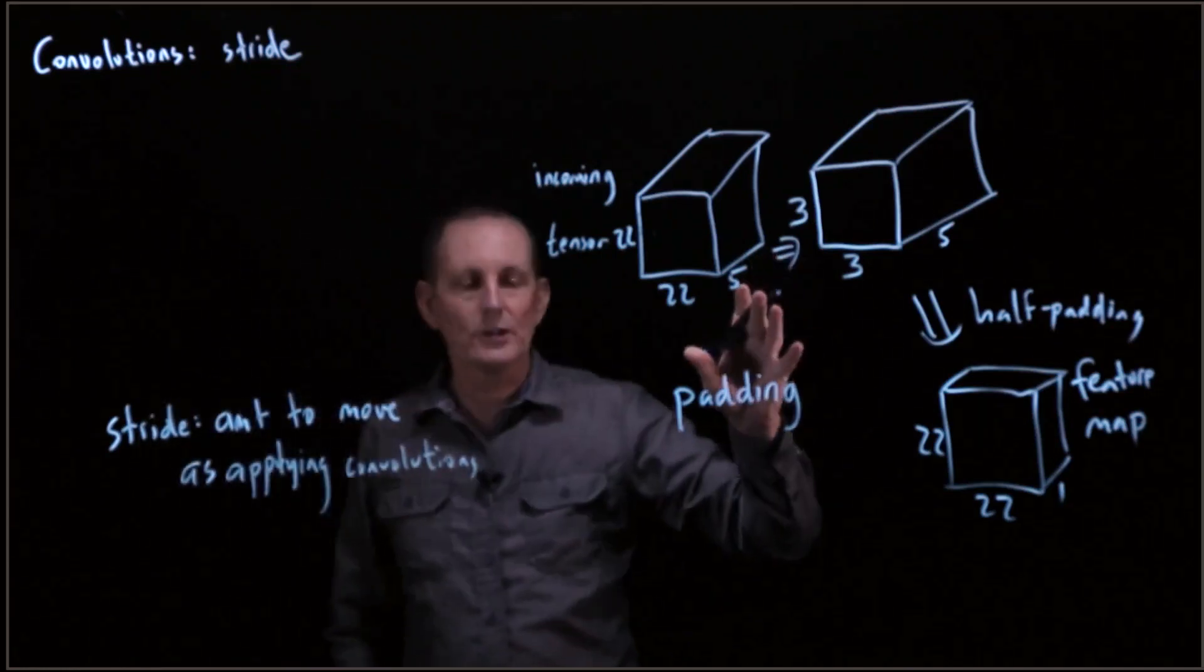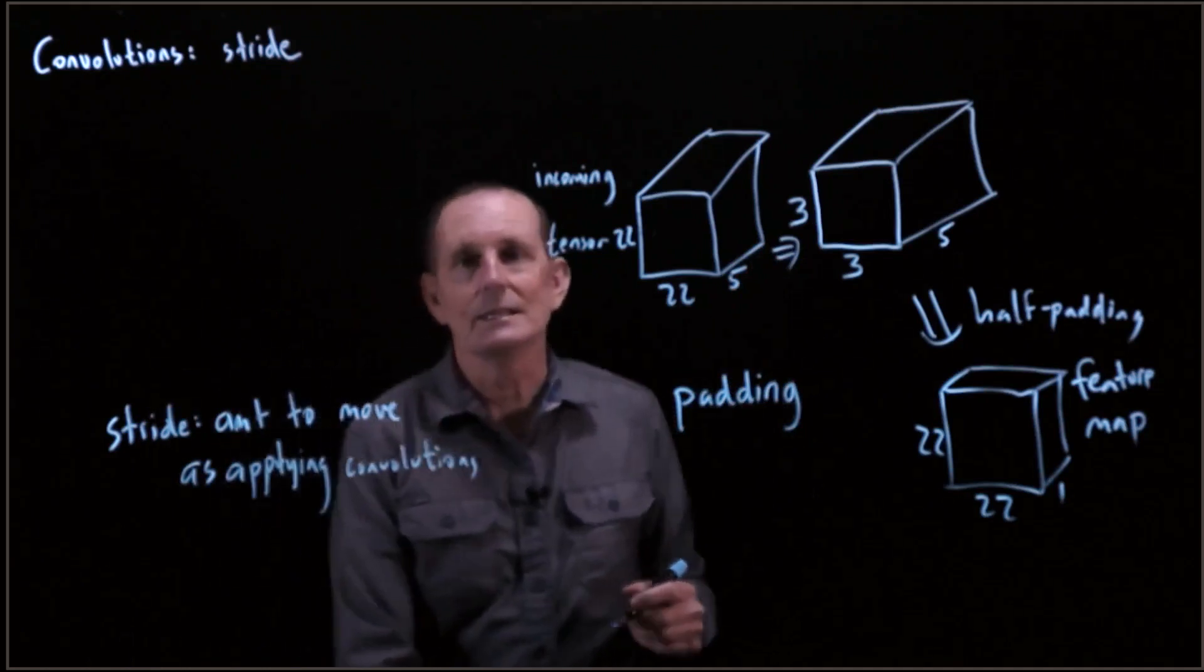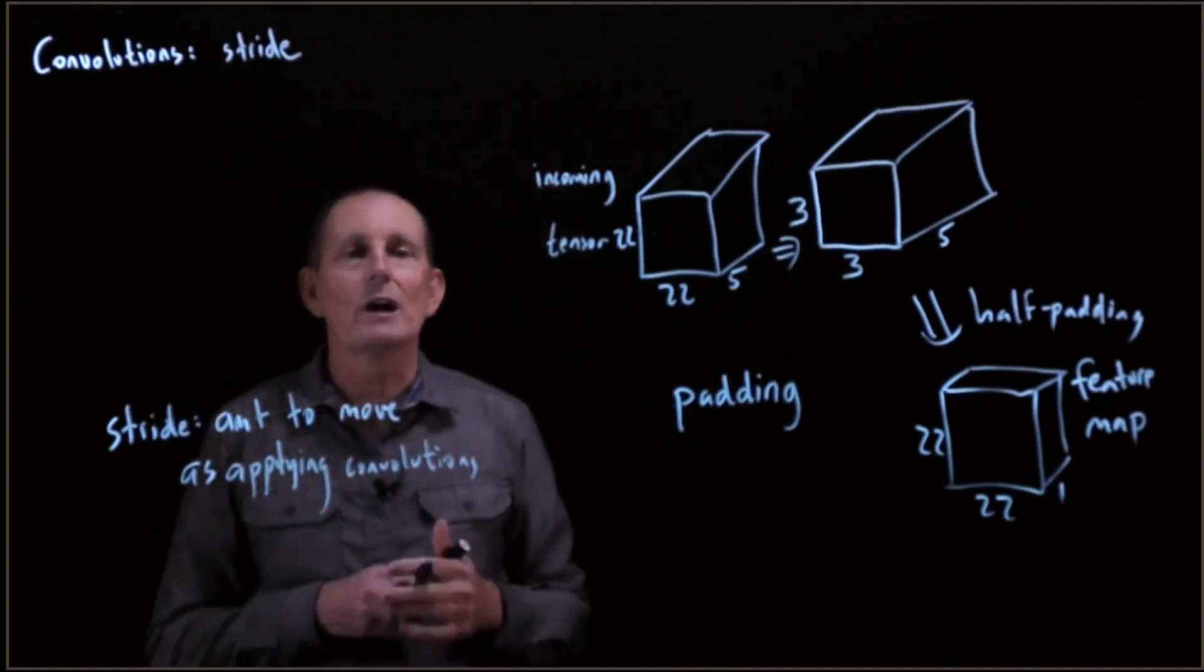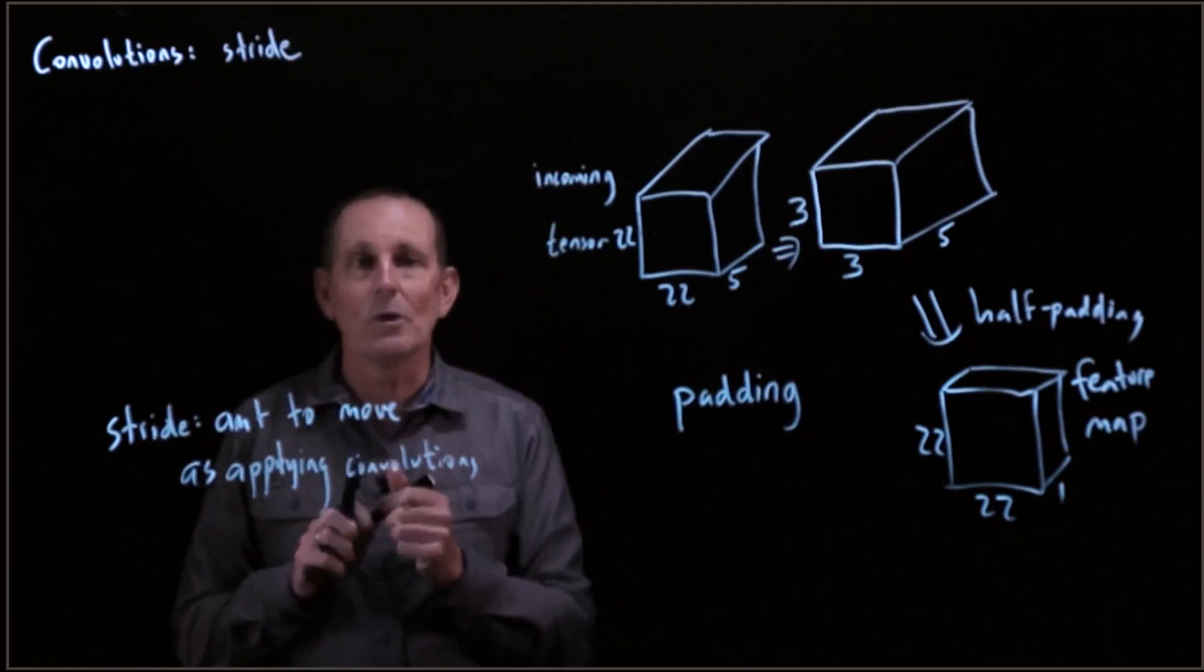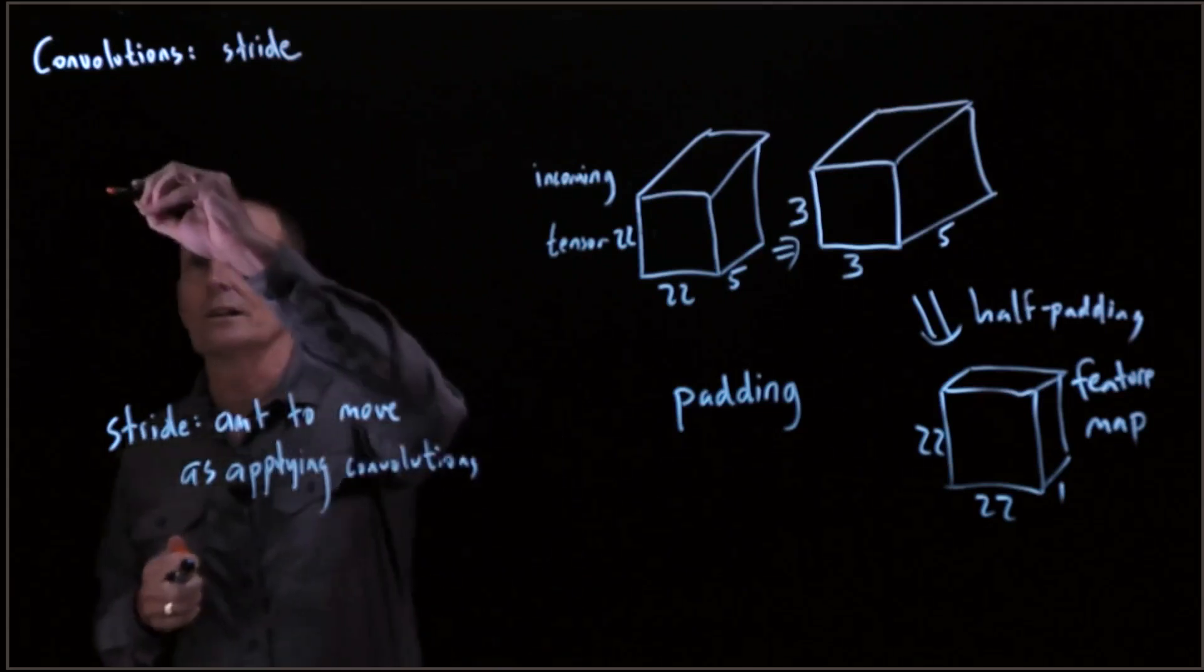When we have a 3 by 3 kernel, then what we see is that a stride of 1 gives us some overlap, right?